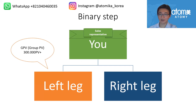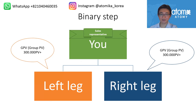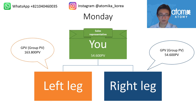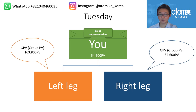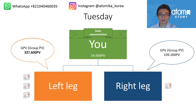Whenever you accumulate 300,000 PV or more in both legs, the binary step is considered matched and you receive money. It doesn't matter how long it takes — it could be a day, a month, or a year. The PV is accumulative, so it carries forward. For example, on Monday you start accumulating, and on Tuesday your group PV stays — it is not nullified.